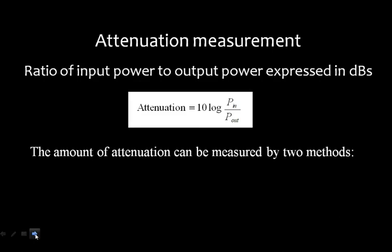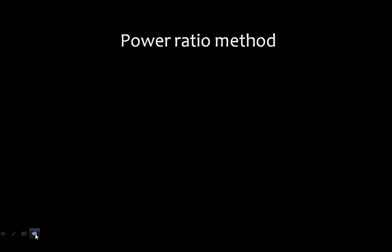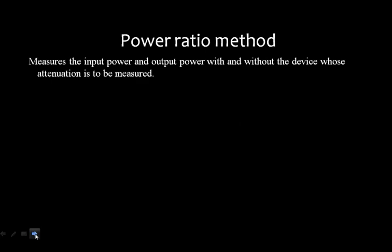The amount of attenuation can be measured by two methods: one is the power ratio method and the other is the RF substitution method. The power ratio method measures the input power and the output power with and without the device whose attenuation is to be measured.